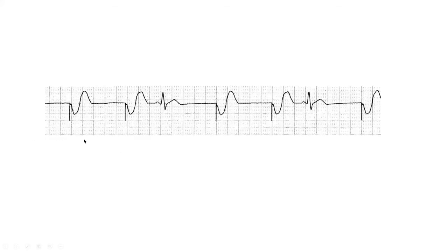This ECG is for teaching — it shows pacing and also native QRS. This is a paced ECG. To calculate the lower pacing rate, calculate from one spike to another: 300, 150, 175, and 60 — so the lower pacing rate is 60. There is appropriate pacing and we are also seeing the QRS, so there is appropriate capture.